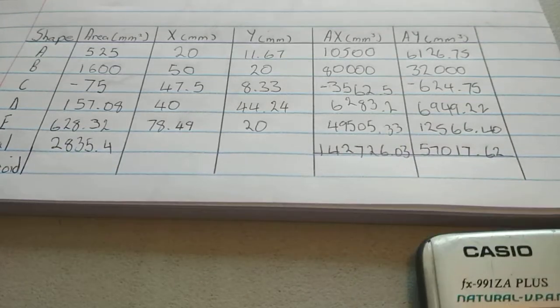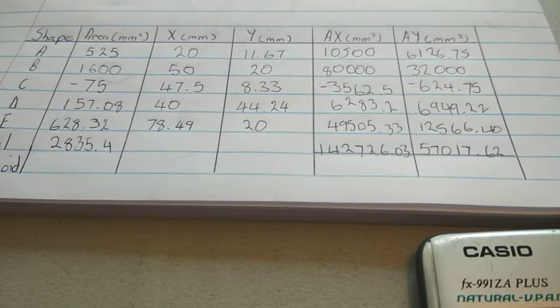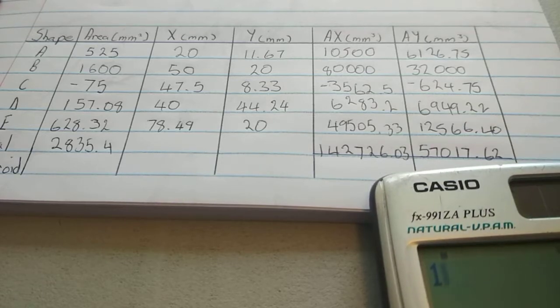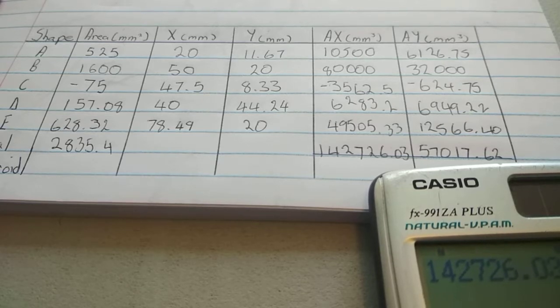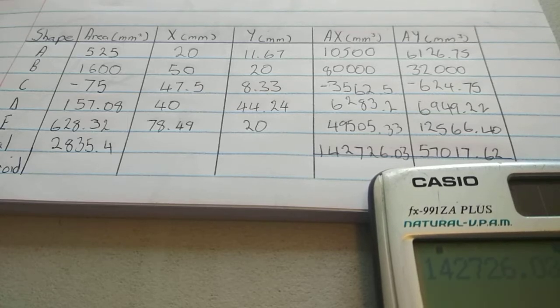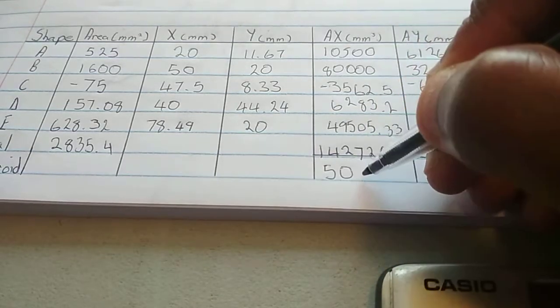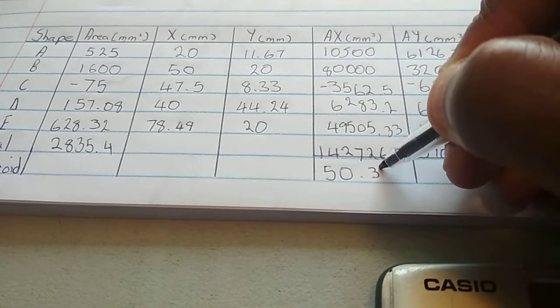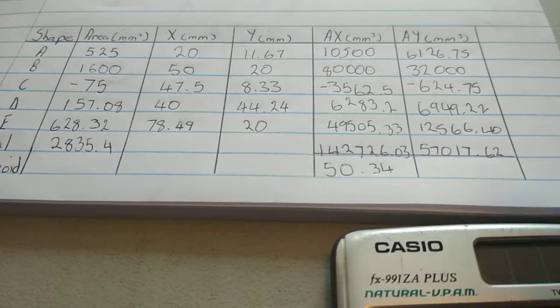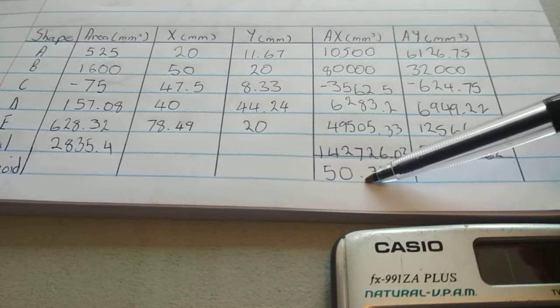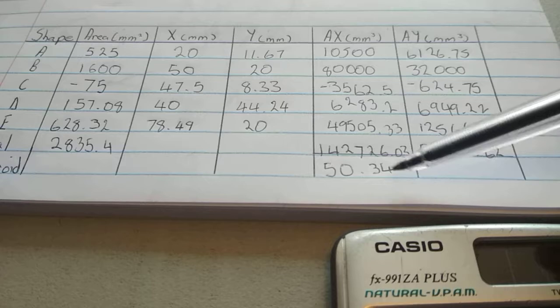We're going to say 142726.03 divided by 2835.4. We're going to get 50.334, rounding it up. So, that means that our centroid on the X axis is located the distance of 50.34 from the datum.